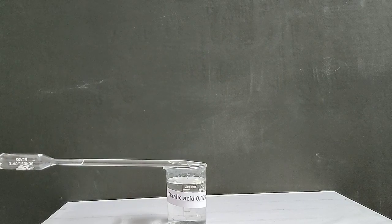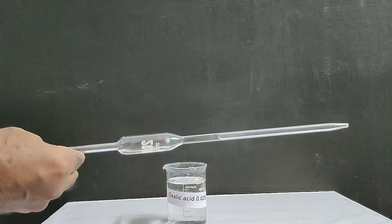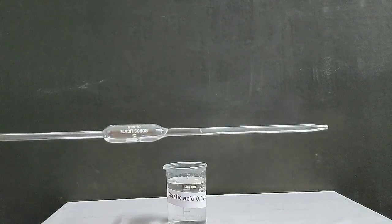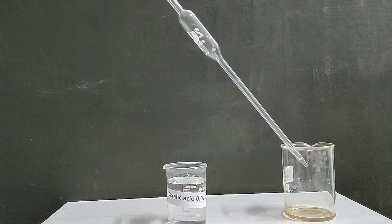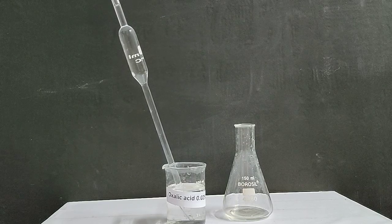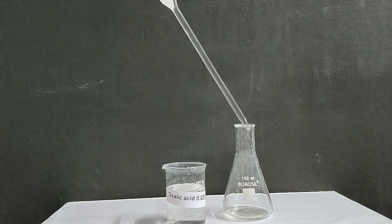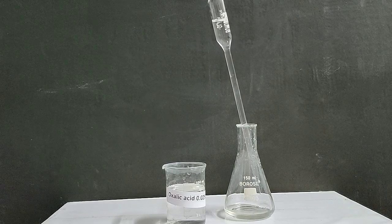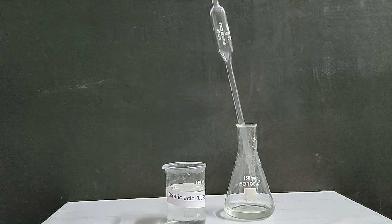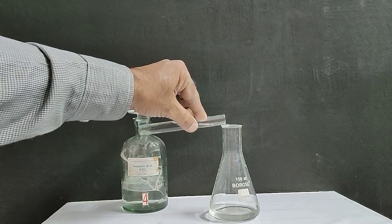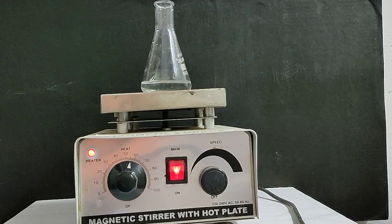Rinse the burette with oxalic acid. Discard the solution. Pipette out 20 ml oxalic acid and transfer into conical flask. Add half test tube sulfuric acid into conical flask. Warm the solution.